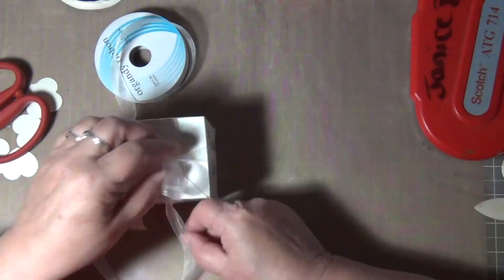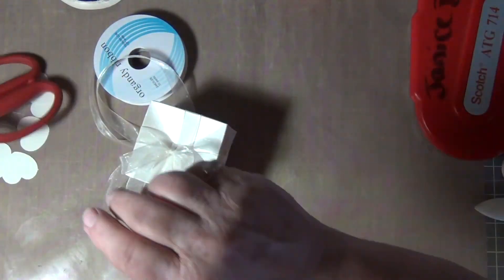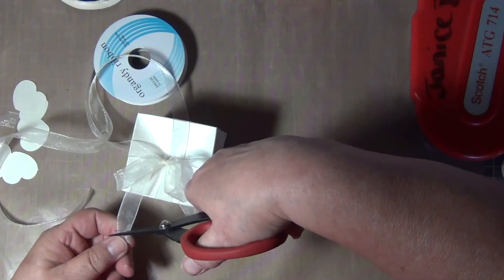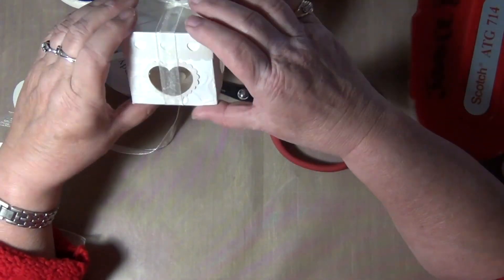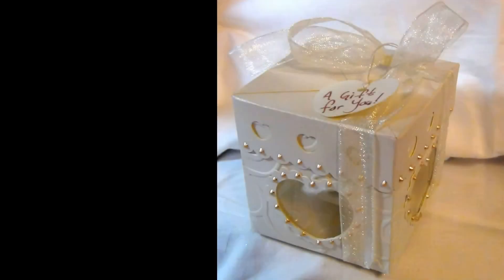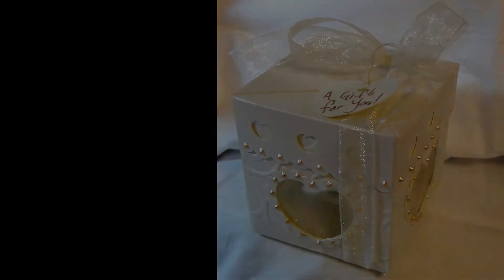Put a little bride and groom on top, some bells, doves, little rings. In this case I put a bow and I also used one of the leftover hearts for a hang tag. And there you go. There's the Valentine box and the wedding box.